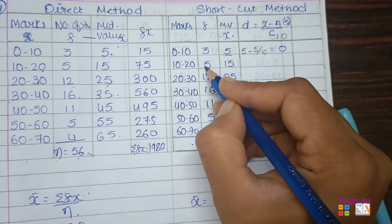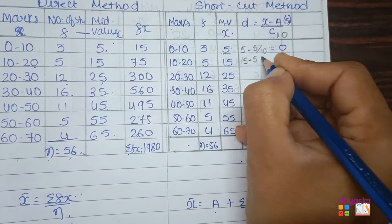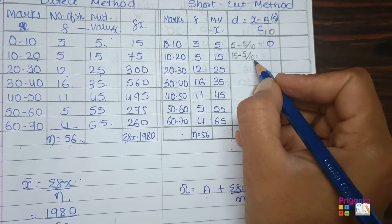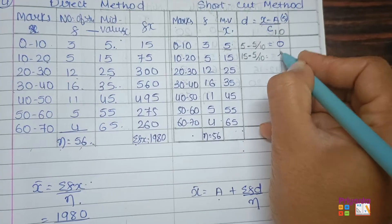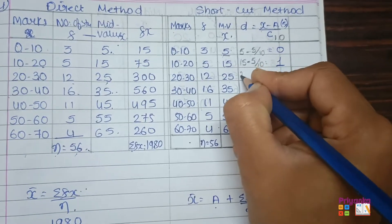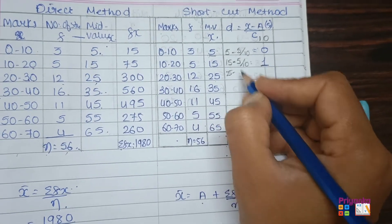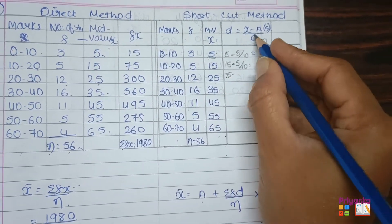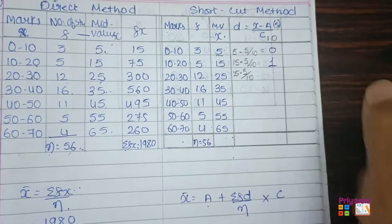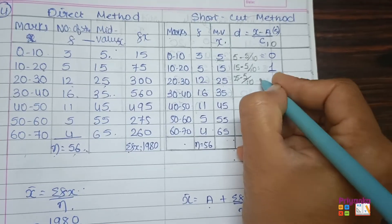Next, for x = 15: (15 − 5) ÷ 10 = 10 ÷ 10 = 1. For x = 25: (25 − 5) ÷ 10 = 20 ÷ 10 = 2. For x = 35: (35 − 5) ÷ 10 = 30 ÷ 10 = 3. In the same way, continue for the remaining values x = 45, 55, and 65 — you will get d = 4, 5, and 6. Don't take the total of d.